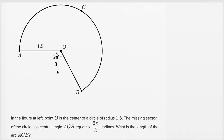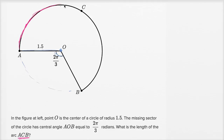In the figure at left, point O is the center of a circle of radius 1.5. The missing sector of the circle has central angle AOB equal to two pi over three radians — that's the central angle for the missing sector right over there. What is the length of arc ACB? ACB is this arc — it's the rest of the circle, the part that's not missing.